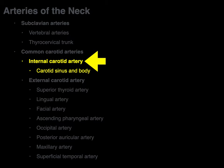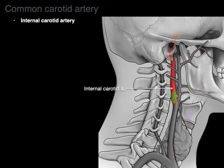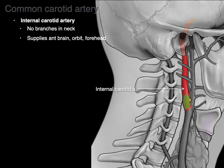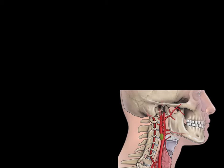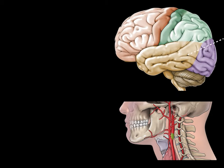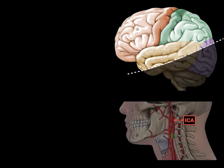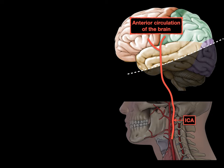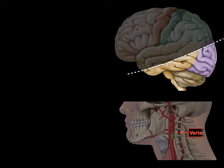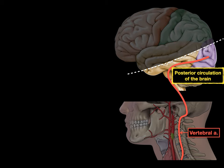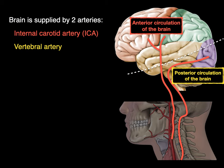The internal carotid artery has no branches in the neck and supplies the anterior part of the brain, as well as the orbit and part of the forehead and scalp. Drawing an oblique line through the temporal lobe helps determine blood supply: the internal carotid provides anterior circulation, while the vertebral arteries provide posterior circulation. The brain is therefore supplied by two arteries — the internal carotid and the vertebral artery, the latter forming the vertebrobasilar system. These are the major blood supplies to the brain, both ascending through the neck.